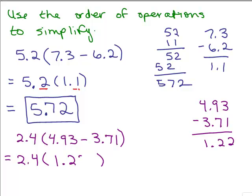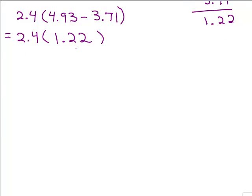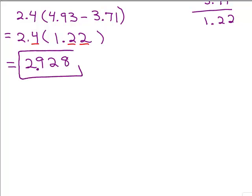So we have 2.4 times 1.22. We're going to have to multiply 24 times 122. You can do that any way you want — I have videos on different multiplication methods or you could use a traditional method. In any case, 24 times 122 is 2,928. Now we have to decide where to put the decimal point: one digit after the decimal point here and two more places, so we need a total of three places. Our answer is 2.928.